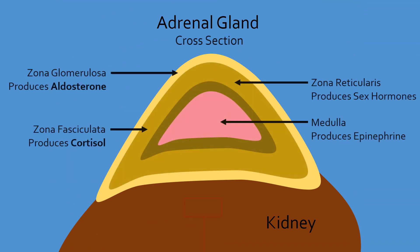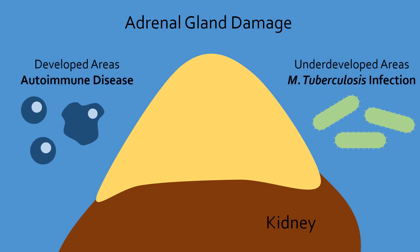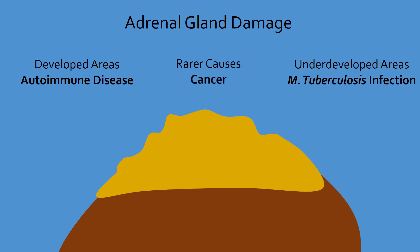Since both corticosteroids are produced by the adrenal glands, damage to the adrenal glands leads to less production of these hormones, causing Addison's disease. In the developed world, this damage is most commonly due to autoimmune disease, while in less developed areas, tuberculosis infections are the main culprit. A less common cause is cancer cells from other areas that have spread to the adrenal glands. In rare situations, genetic mutations may interfere with adrenal gland development or cause the enzymes that produce corticosteroids to become dysfunctional. Addison's disease affects around 1 in 100,000 people and is more common in middle-aged individuals.